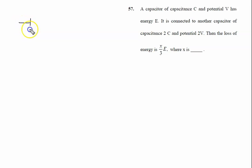A capacitor of capacitance C and potential V has energy E. Energy is given by half CV square. It is connected to another capacitor of capacitance 2C.